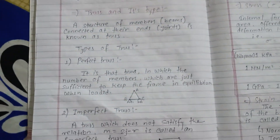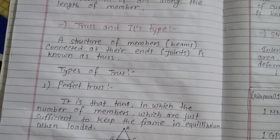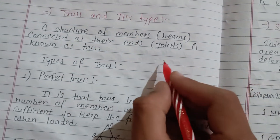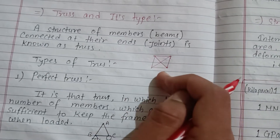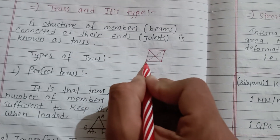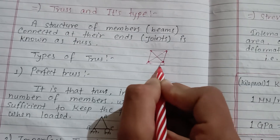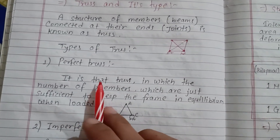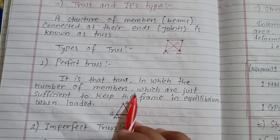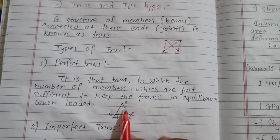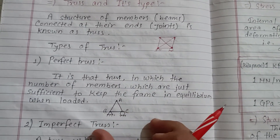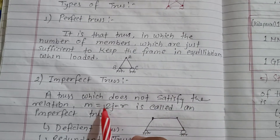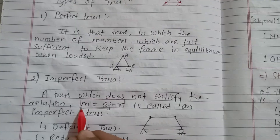A truss is a structure of members connected at their ends. A perfect truss is one in which the number of members is just sufficient to keep the frame in equilibrium when loaded, satisfying the relation m = 2j − 3. An imperfect truss does not satisfy this relation.